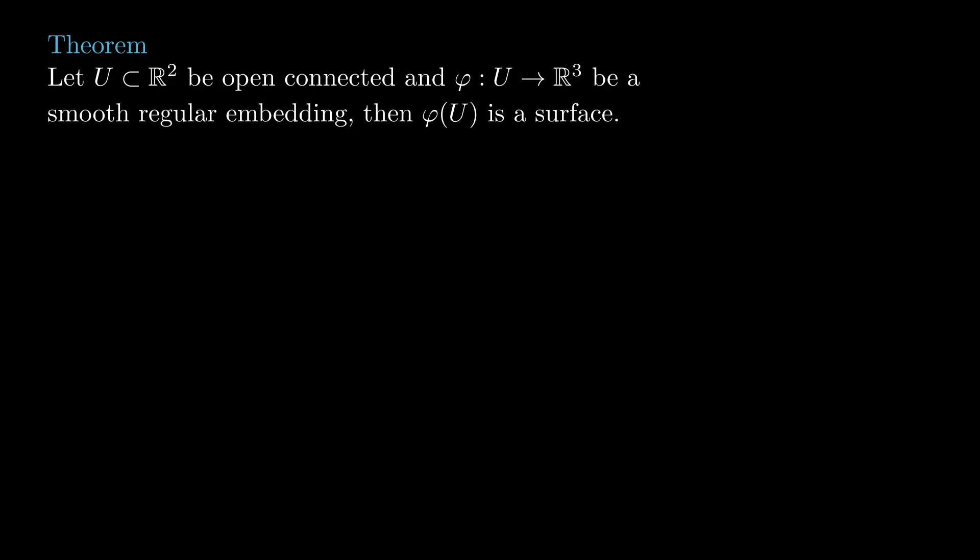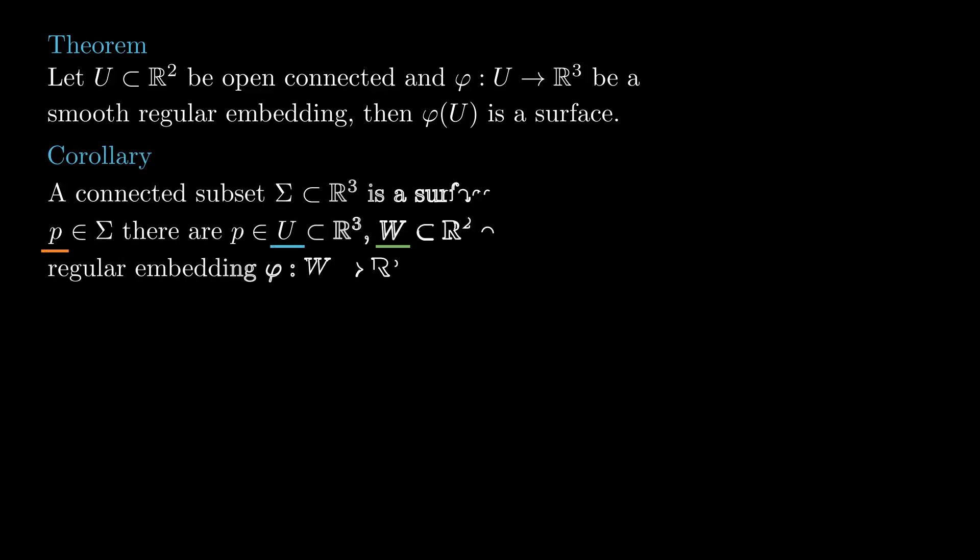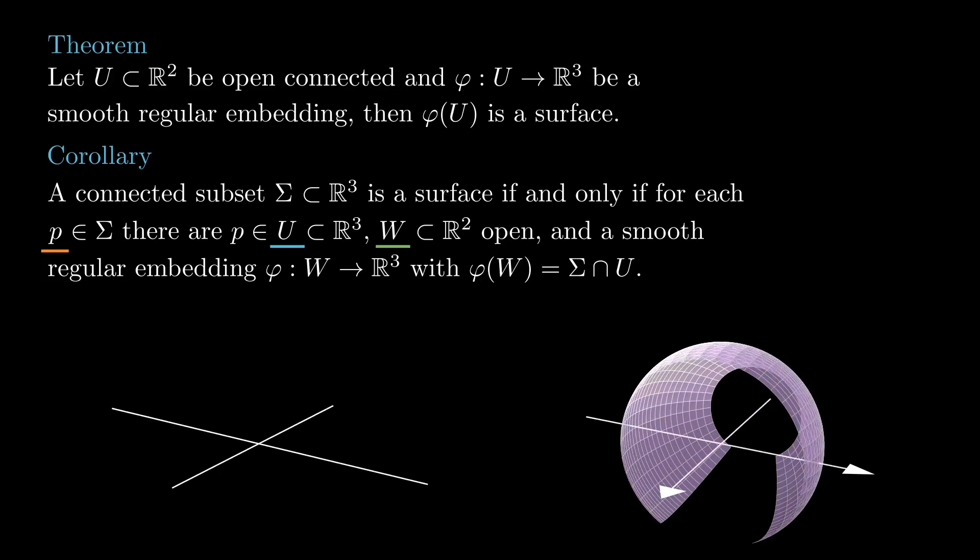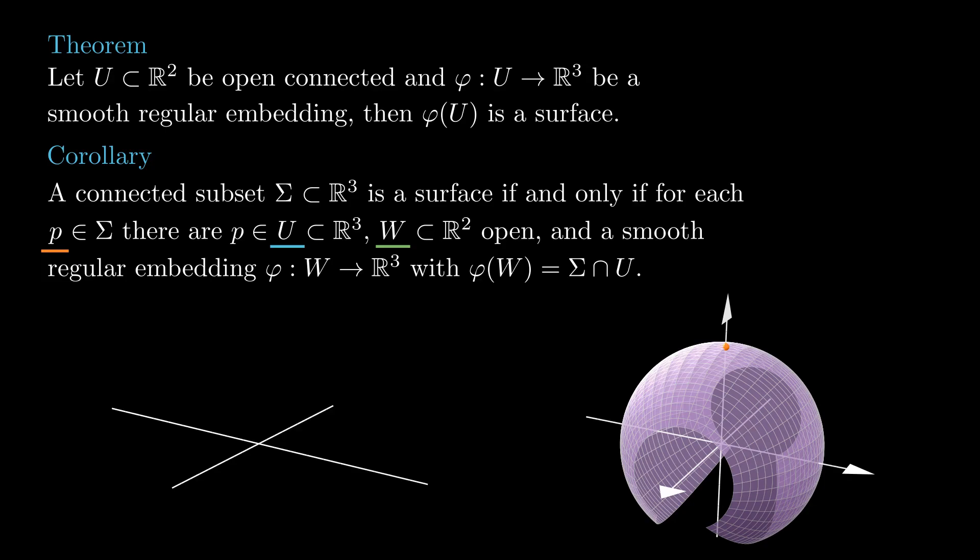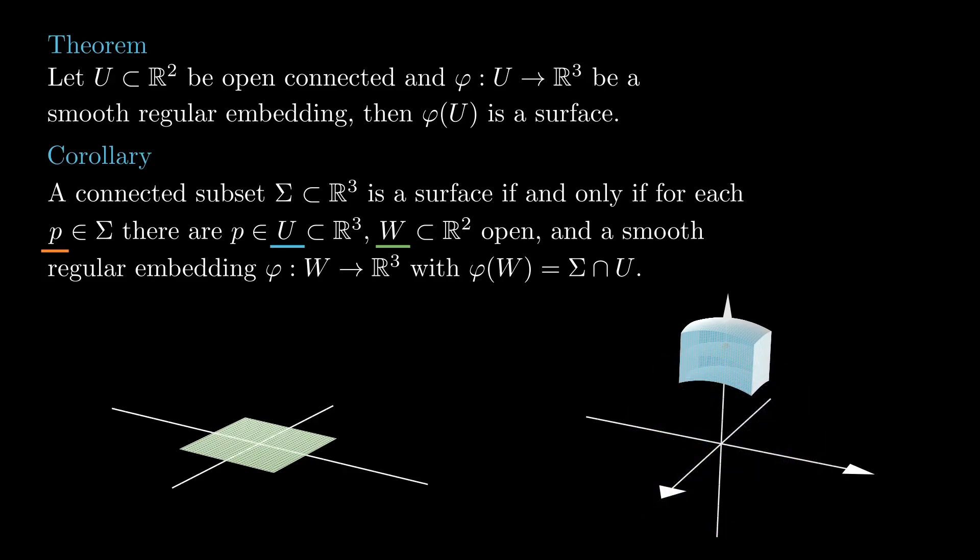This proves the theorem, which implies the following characterization of smooth surfaces. A connected subset sigma of R3 is a smooth surface if and only if, for any point p in sigma, there is an open set u containing p, an open set w in R2, and a smooth regular embedding phi from w to R3,